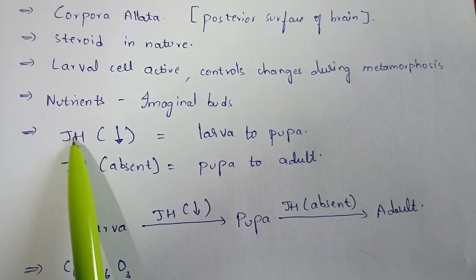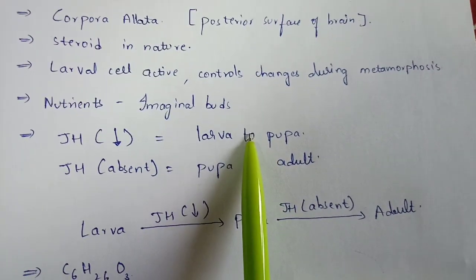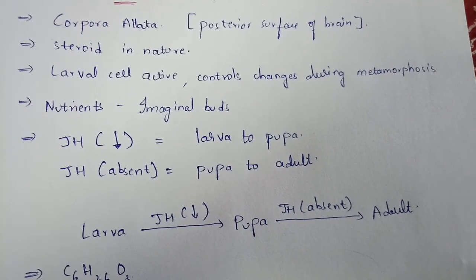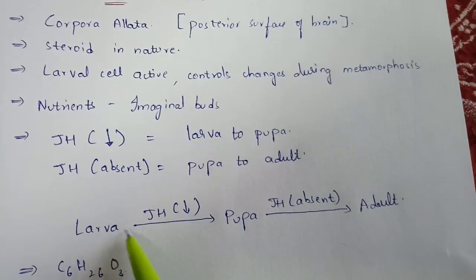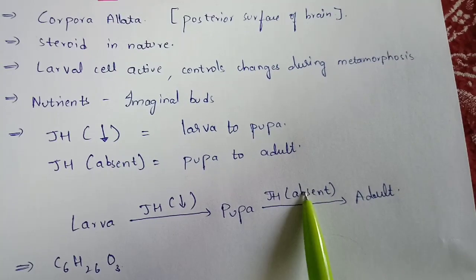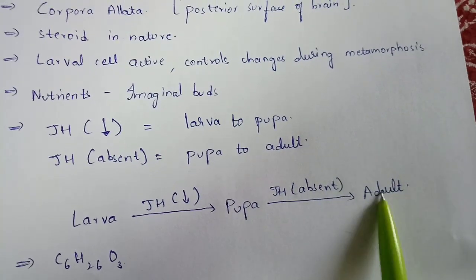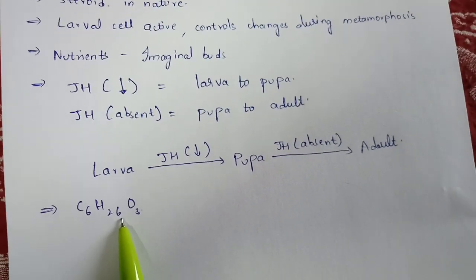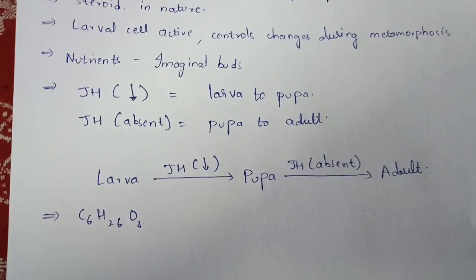When the content of juvenile hormone decreases in the blood of the caterpillar, the larva stage will enter into the pupa stage. When the juvenile hormone becomes totally absent, the pupa stage will get transformed into adult stage. These two points are very important to remember. The molecular formula of juvenile hormone is C16H26O3.